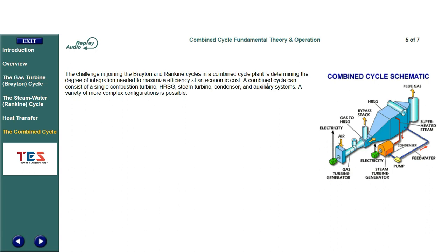A combined cycle can consist of a single combustion turbine, HRSG, steam turbine, condenser, and auxiliary systems. A variety of more complex configurations is also possible.